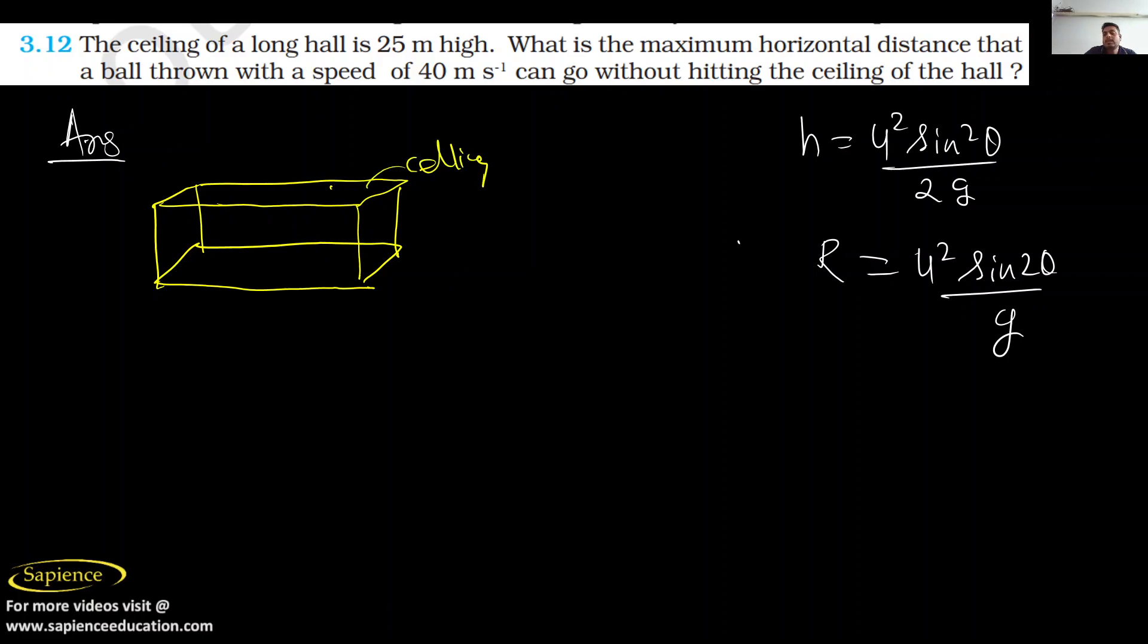What is the maximum horizontal distance that a ball thrown with a speed of 40 meters per second can go? So they have given u equals 40 meters per second, and the ball should be thrown from here and go like this without hitting the ceiling.